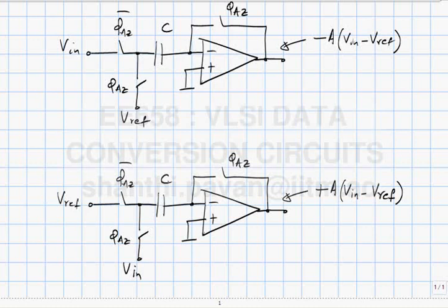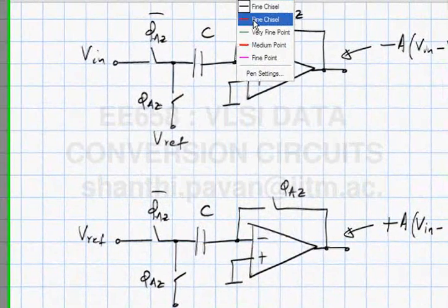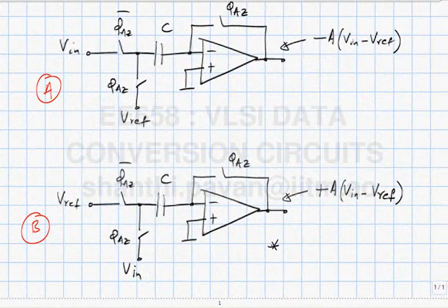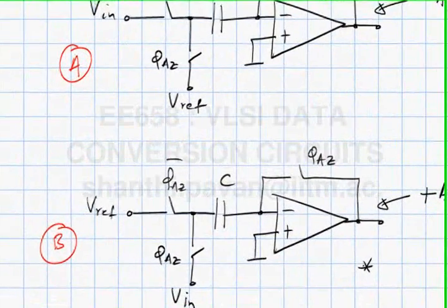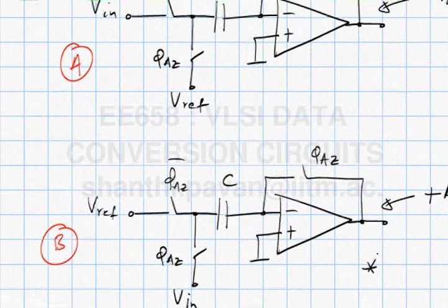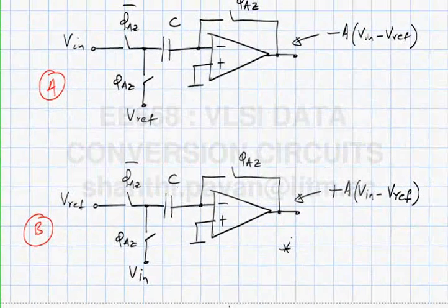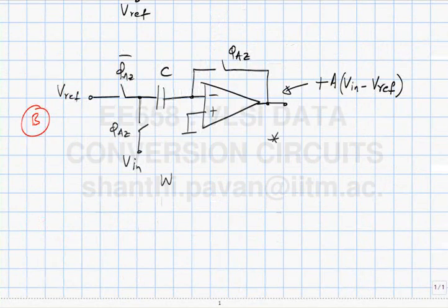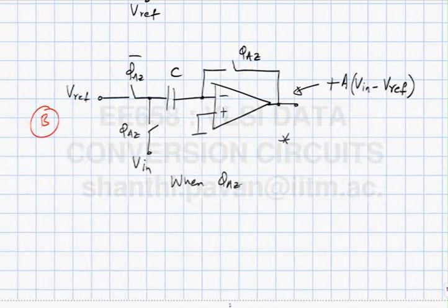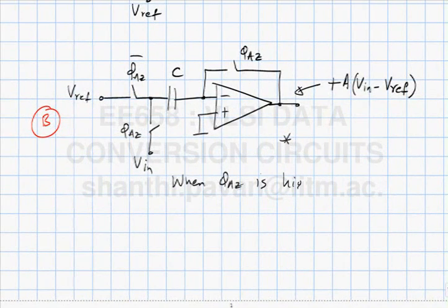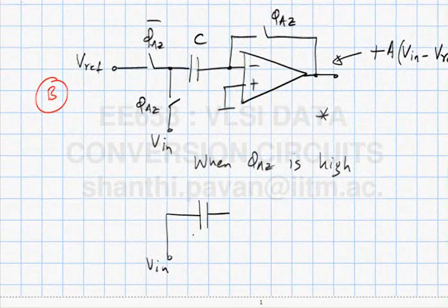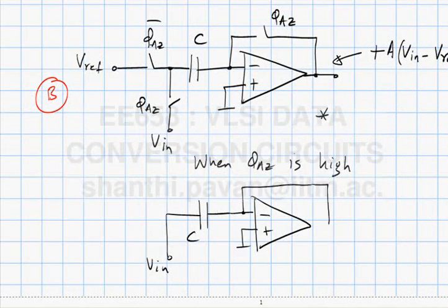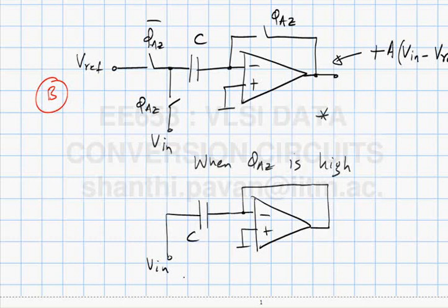Can you comment on the relative merits or potential problem with this? Which is, what is the load presented to V in during phi AZ? When phi AZ is high, what is the situation? It is V in capacitance. So what is the looking in impedance here? 1 over SC. Why is it 1 over SC? Which voltage is grounded? This voltage is grounded, I agree.